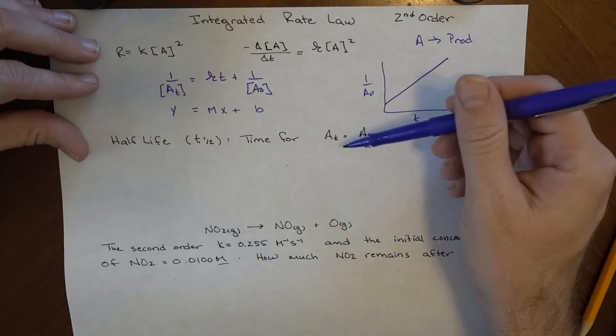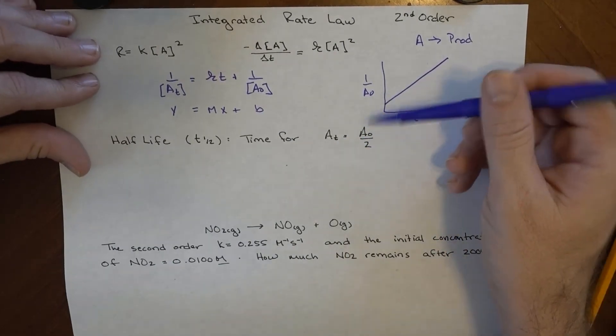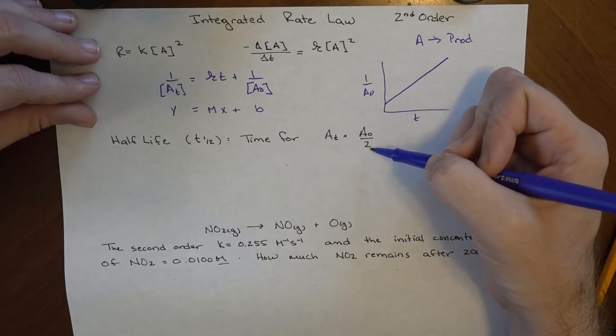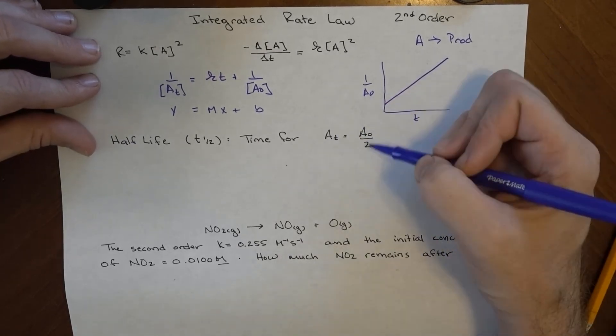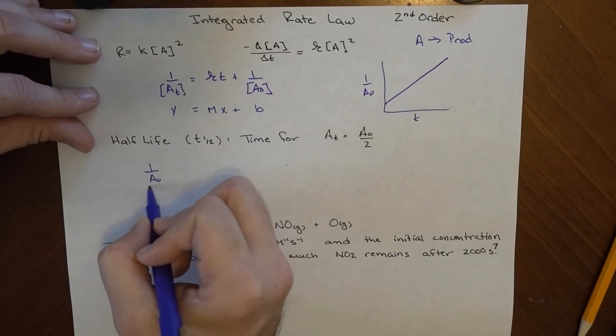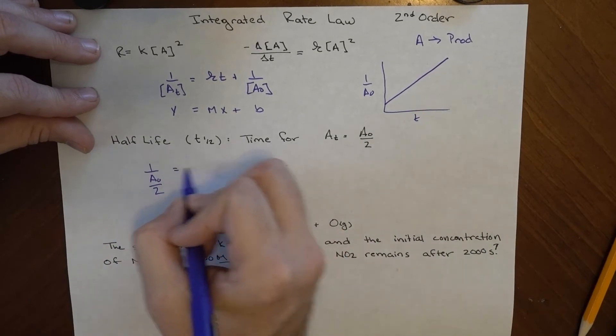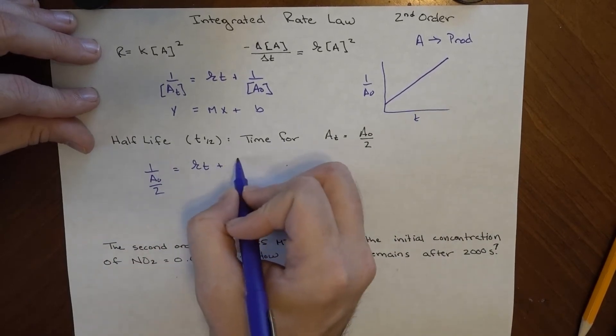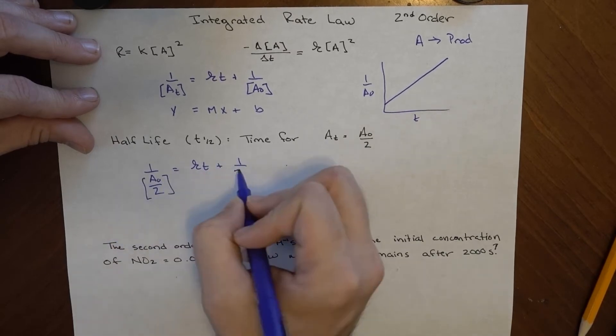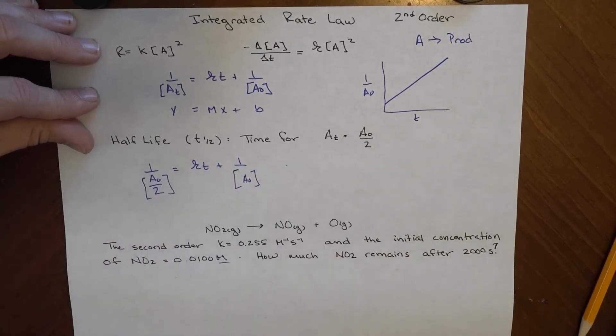Now we can figure out the half-life for this as well, simply by making the value at time t equal to half of what we started with. So if I just plug this number in, I get that kt plus 1 over [A]₀.